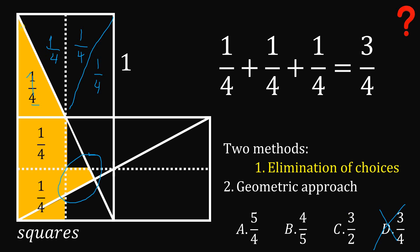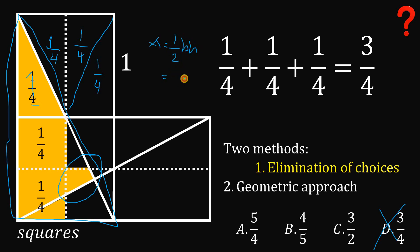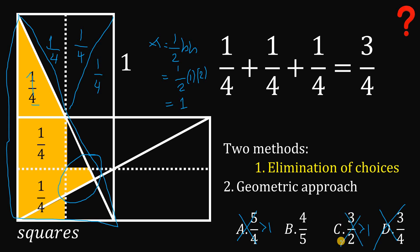Now consider the other choices. The area of the full right triangle equals one half times base times height, where the base is one and the height is two, giving an area of exactly one square unit. Since 5 over 4 is greater than one, choice A is eliminated. Similarly, 3 over 2 equals 1.5, which is also greater than one, so choice C is eliminated. Therefore the answer must be letter B: 4 over 5.